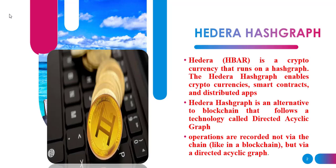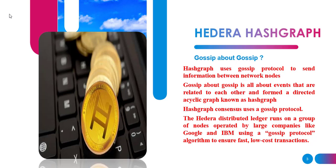In blockchain technology, the events and operations are recorded in the form of a chain. Whereas here in Hedera Hashgraph, the operations are recorded in the form of directed acyclic graph. Hedera Hashgraph basically runs or works on the principle of gossip about gossip protocol. The gossip protocol is used here to send information between different nodes, which are basically the points in the graph.